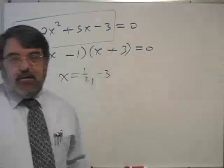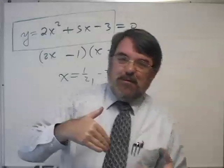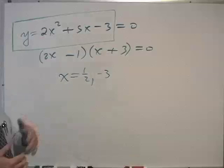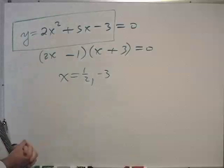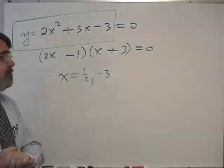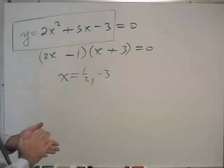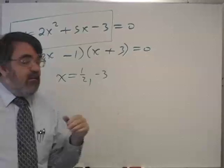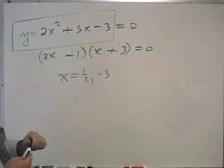It could be written as a function. You might remember functions from early in the course. y and f of x. This could be f of x equals 2x squared plus 5x minus 3. As a function, with x's and y's, we can draw a graph. And here's what the graph looks like.